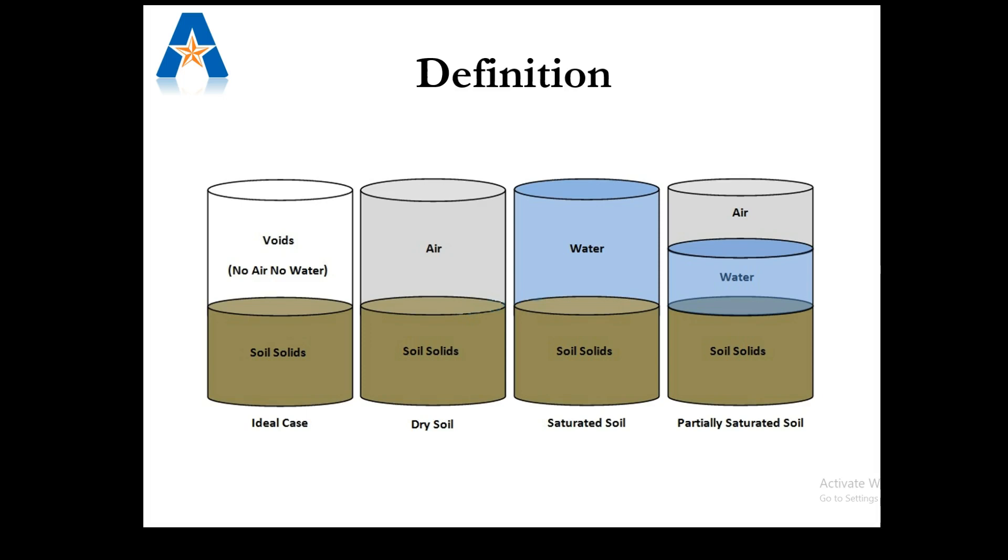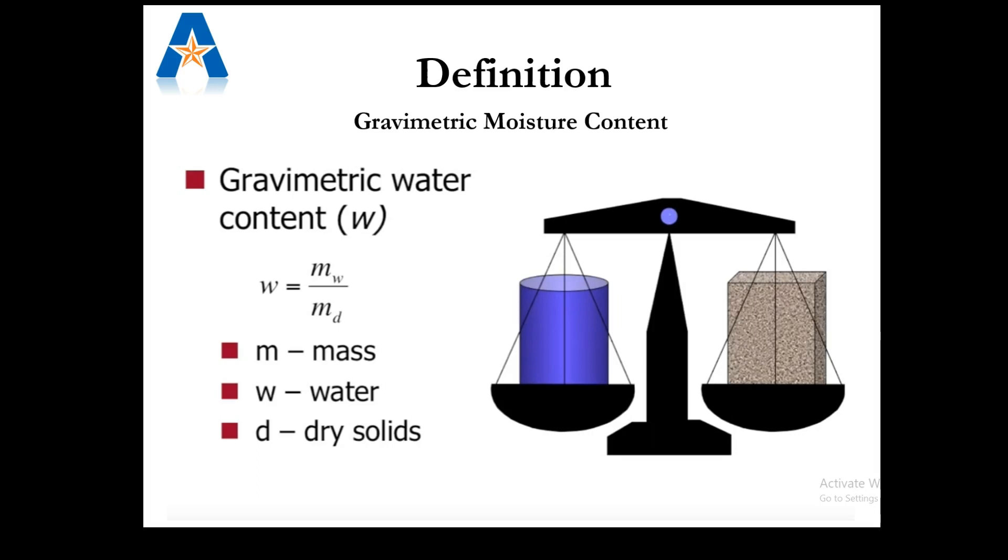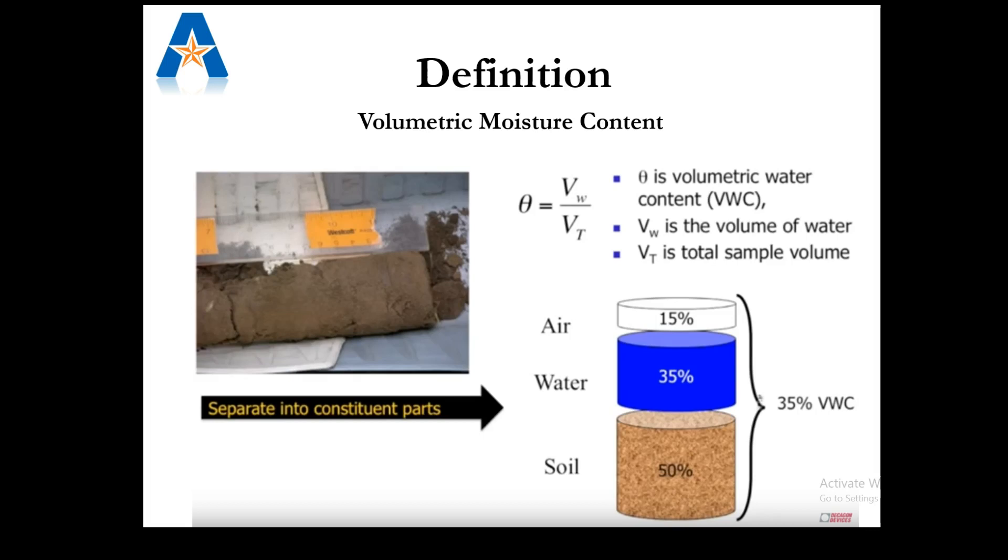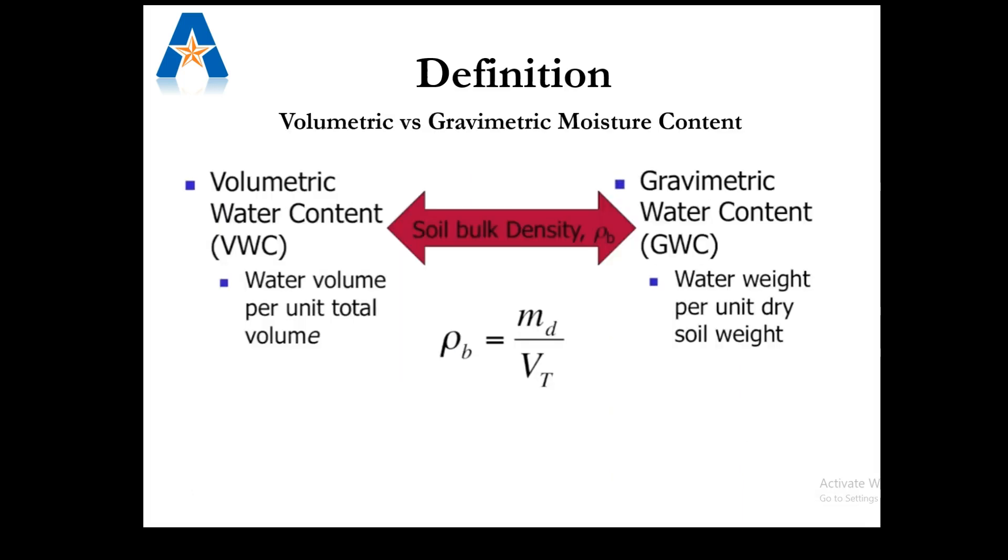When moisture content is expressed on a weight basis, it is called gravimetric moisture content. On the other hand, volumetric moisture content can be defined as the ratio of the volume of water to the total volume of soil sample. The bulk density of soil has a relationship with both volumetric and gravimetric moisture content. There are relationships for converting from volumetric moisture content to gravimetric moisture content. In this experiment, we will focus only on gravimetric moisture content.